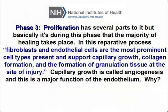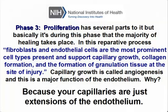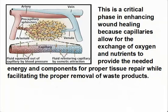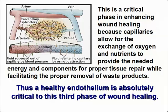Phase three, proliferation, has several parts to it, but basically it's during this phase that the majority of healing takes place. In this reparative process, fibroblasts and endothelial cells are the most prominent cell types present, and support capillary growth, collagen formation, and the formation of granulation tissue at the site of injury. Capillary growth is called angiogenesis, and this is a major function of the endothelium, because your capillaries are just extensions of the endothelium. This is a critical phase in enhancing wound healing because capillaries allow for the exchange of oxygen and nutrients to provide the needed energy and components for proper tissue repair while facilitating the proper removal of waste products. Thus, a healthy endothelium is absolutely critical to this third phase of wound healing.